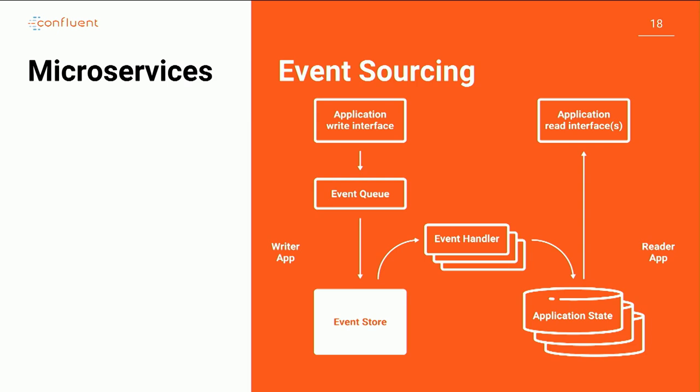Event sourcing has become popular, and it's happening naturally in the stream processing space. A lot of the stream processing capabilities in Kafka are internally event sourced. The natural representation for those events is a kind of stored commit log of what happened — and that's a lot more valuable than stitching together a queue and a store and many other things.